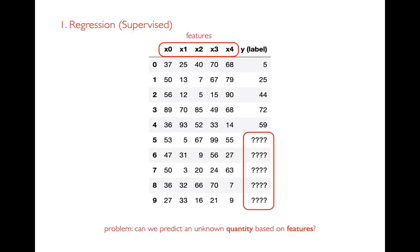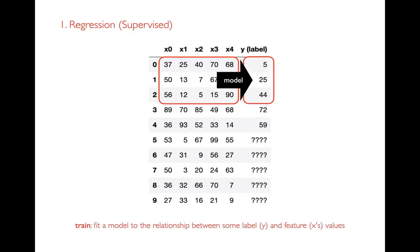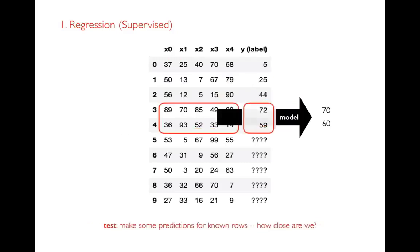The problem with regression is that we want to predict the quantity — the Y column — based on the features, and by quantity I mean this is a number. We might break it down into three parts: first, select a subset of data where we know the answer to train on; then leave some other data aside that we also know the answer to; then run an algorithm that infers the relationship between features and labels. Once that's done, we run our model on those other known examples. My model will give somewhat different answers, and I can use this to evaluate or test my model — that's the testing phase.